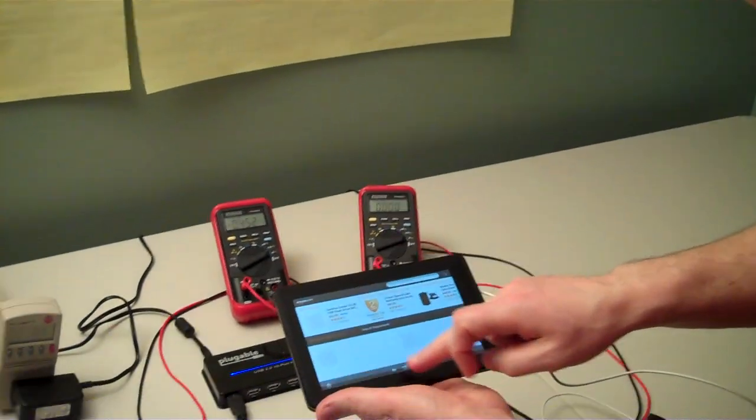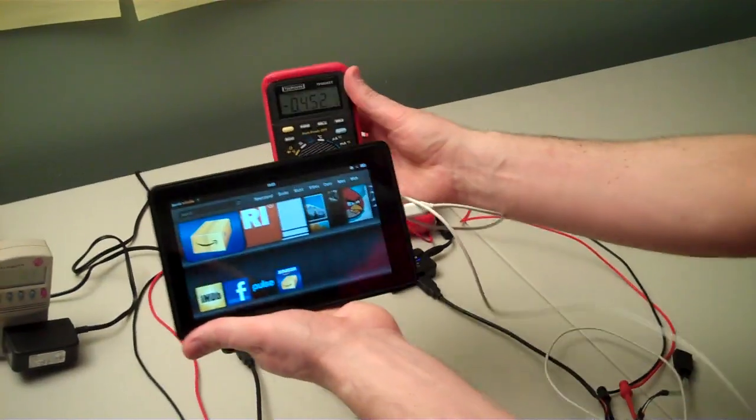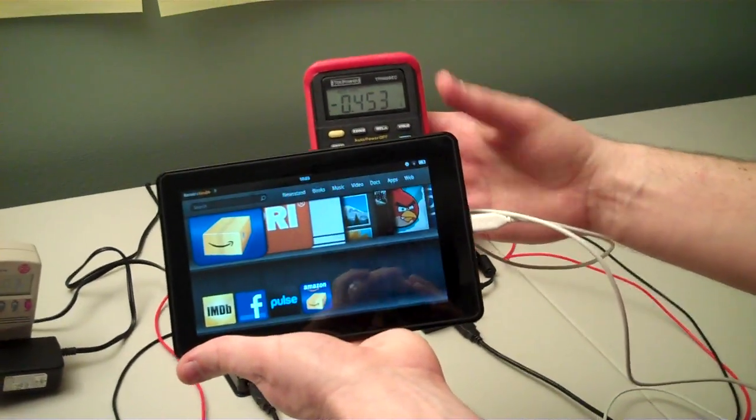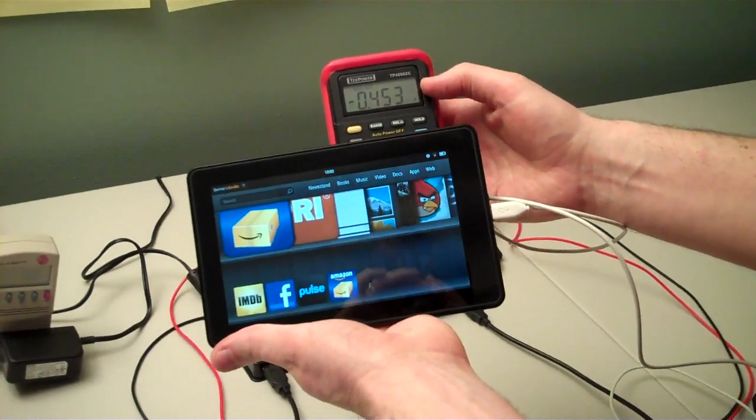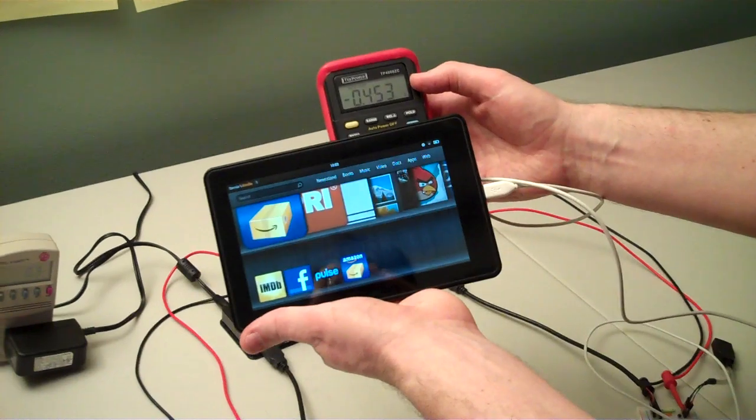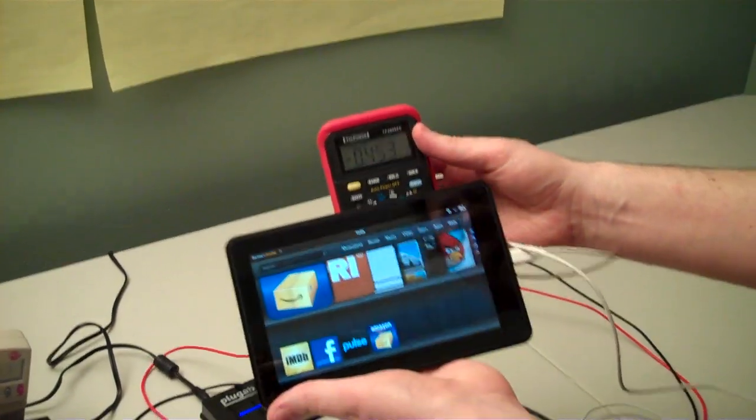When the Kindle Fire is charging at its full rate, it has a little battery icon up there that goes green. You can see that that is not happening and that it's pulling 450 milliamps, which is just about the maximum that standard USB 2 can do. So it is charging, but at that 450 rate.